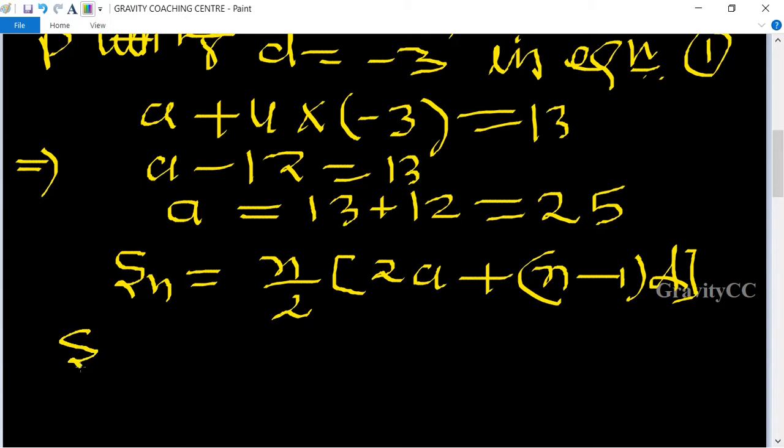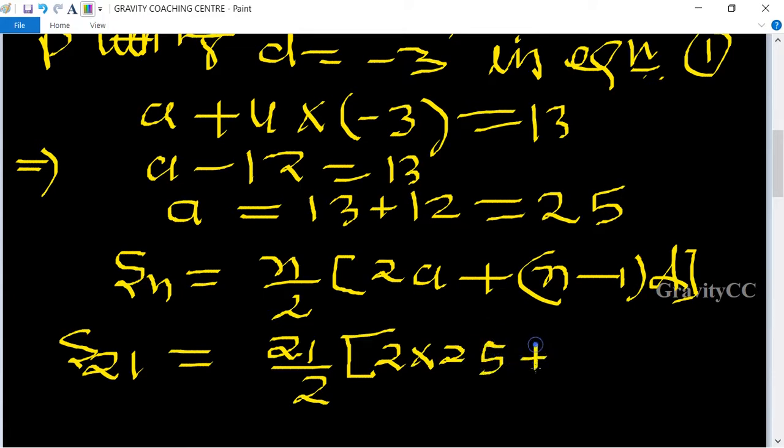So S₂₁ = 21/2 × [2 × 25 + (21 - 1) × (-3)].